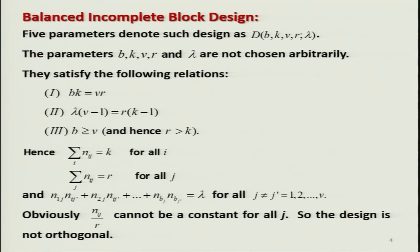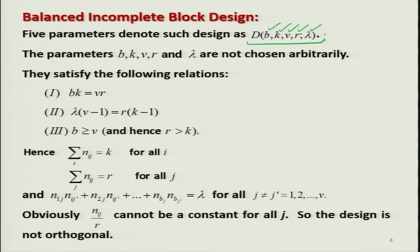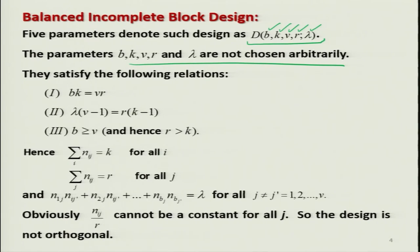There are five parameters: B, K, V, R, and lambda. These five parameters indicate the BIBD. The design D is represented by these five parameters B, K, V, R, and lambda. They are not chosen arbitrarily — they are chosen such that the following three conditions are satisfied: (1) BK = VR; (2) lambda(V − 1) = R(K − 1); (3) B ≥ V, and consequently R ≥ K.